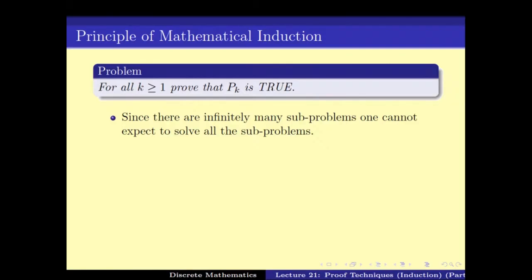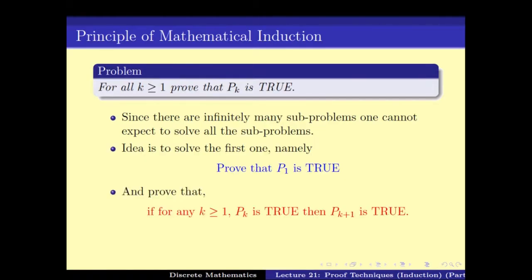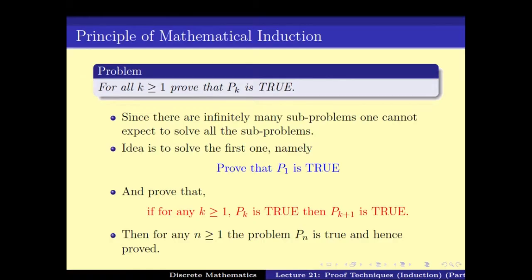One cannot go about proving all the problems individually because there are infinitely many of them, so one has to come up with a cleverer way of solving it. The idea is to first solve the first case, namely P1, and then show that for all K, if Pk is true then Pk+1 is true. By doing so, you prove for all N that Pn is true, because P1 is true implies P2 is true, P2 implies P3, and so on — proving Pn is true for all N ≥ 1.